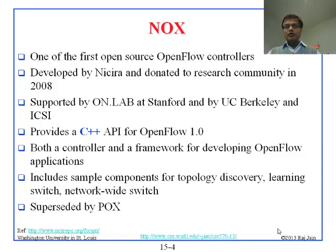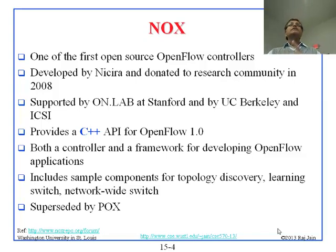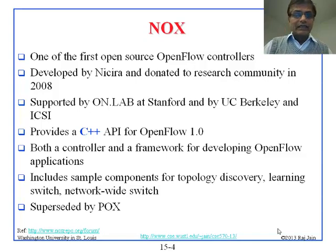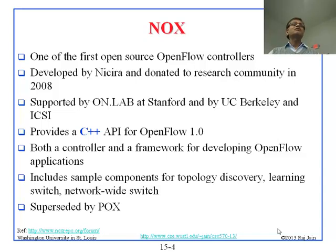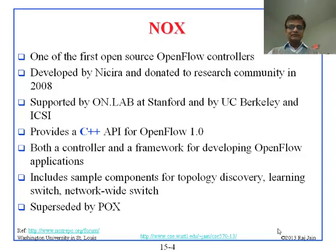NOX includes sample components for topology discovery, learning switch, and network-wide switch. Topology discovery means how the network is connected — how the physical components are connected. A learning switch is what the normal standard Ethernet switch is. It learns the addresses by source learning — it looks at the source addresses and figures out where to send the packets. That is called a learning switch.